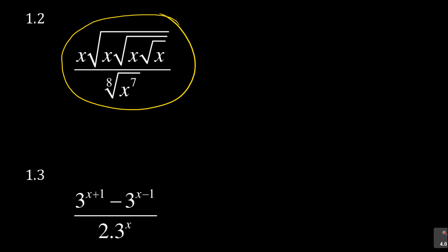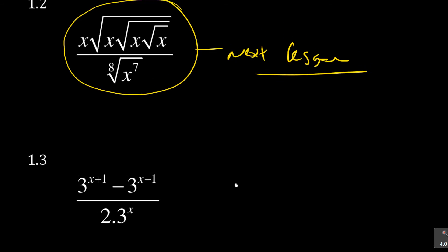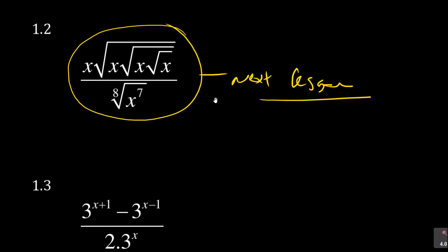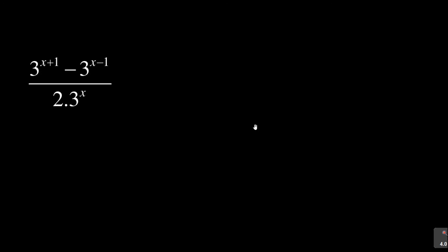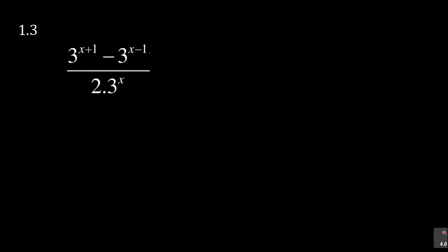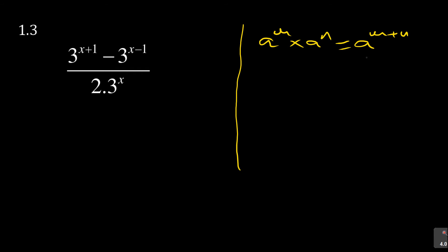Because of time, question 1.2 will be covered in the next lesson — stay tuned. But I want to quickly finish with 1.3. For 1.3, you need to use the first law, but read it in reverse: a to the power m plus n equals a to the power m times a to the power n. That means you split the exponent apart — for example, 3 to the power x plus 1 becomes 3 to the power x times 3 to the power 1.